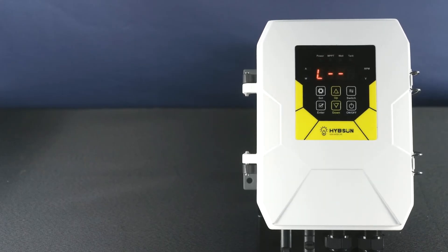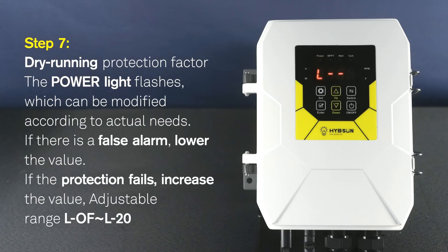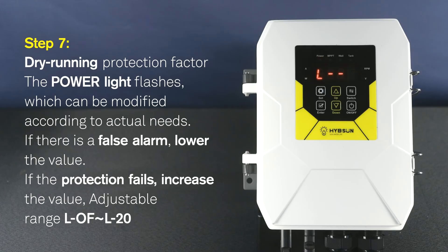Step 7: Dry running protection factor. The power light flashes, which can be modified according to actual needs. If there is a false alarm, lower the value. If the protection fails, increase the value. Adjustable range: L0 to L20.